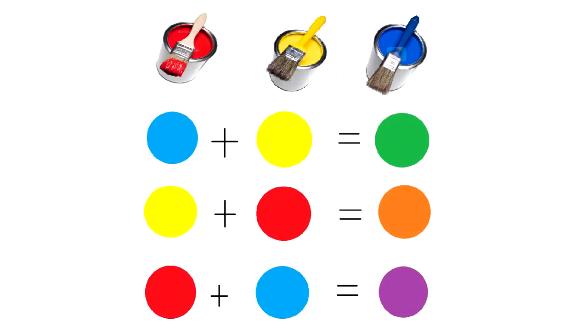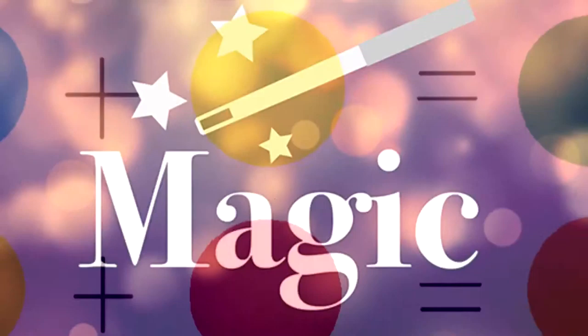But if you mix two of the three colors together, it'll make a different color. For example, if you add blue and yellow, it'll make green. If you add yellow and red, it'll make orange. And finally, if you add red and blue, it'll make purple.